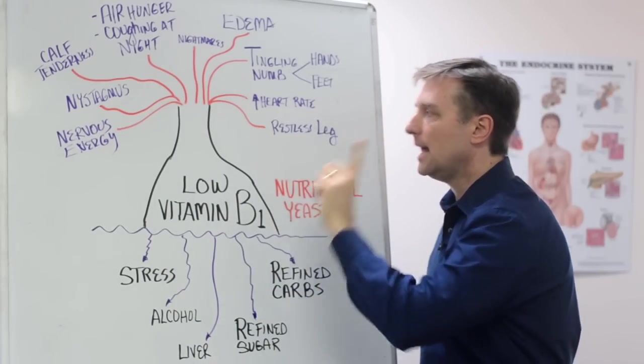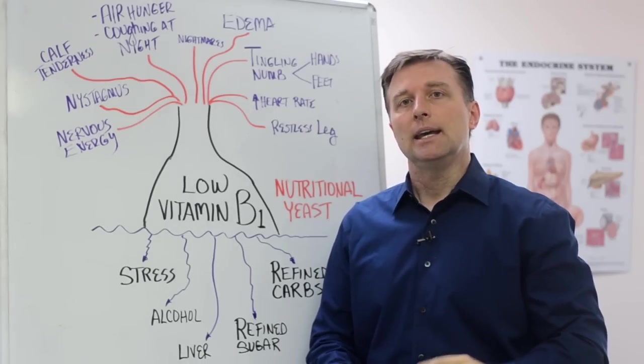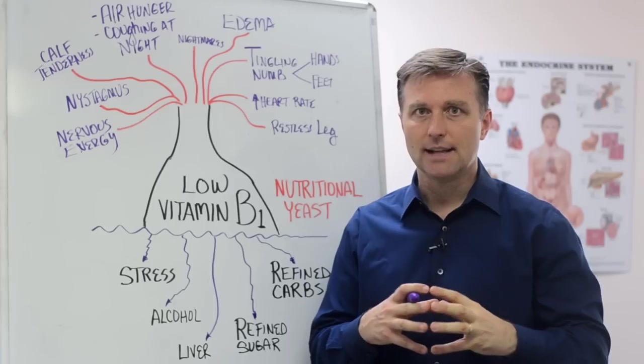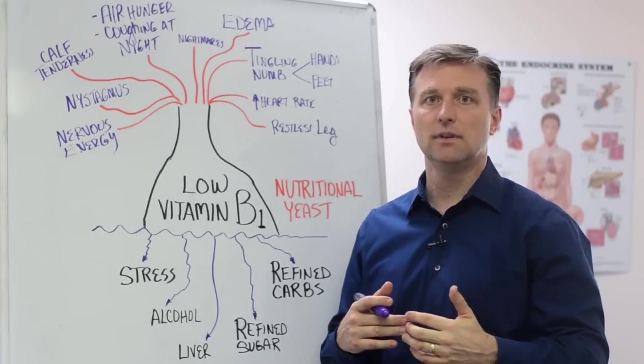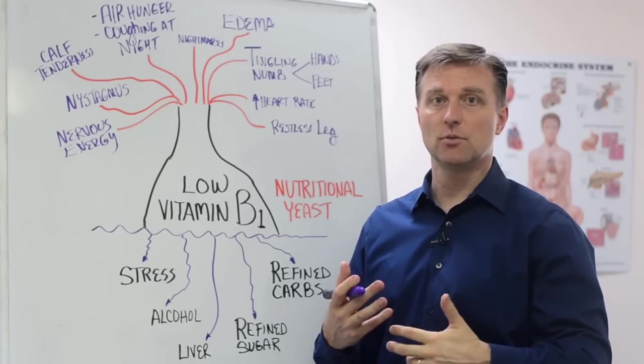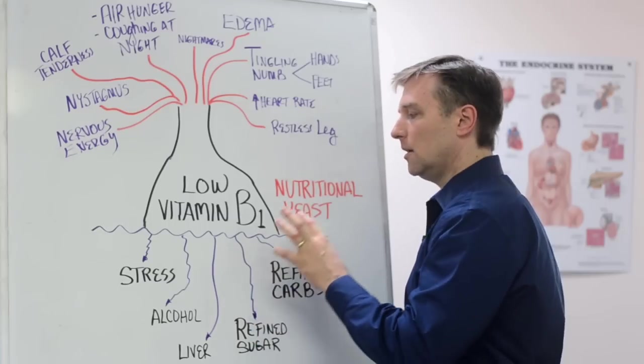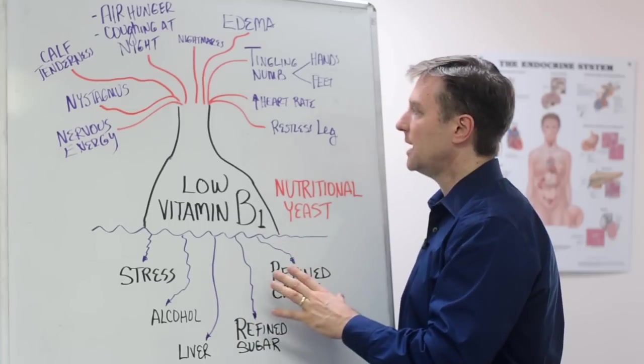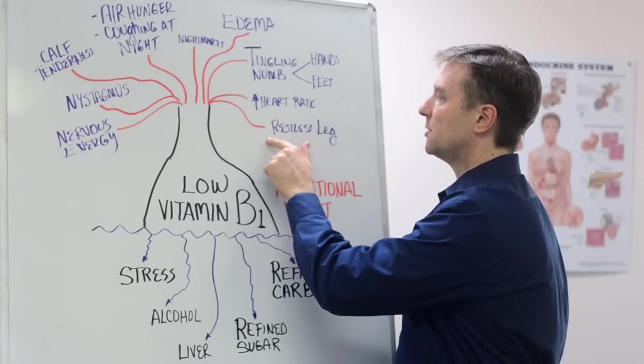First symptom is restless legs, restless leg syndrome. That's a B1 deficiency. It's a buildup of lactic acid. Lactic acid builds up from a natural process of carbohydrate metabolism or sugar metabolism in your body. So if you're eating too much sugar or breads and pasta and cereal and crackers, all that stuff, and it can't clear it, you'll end up with restless leg.